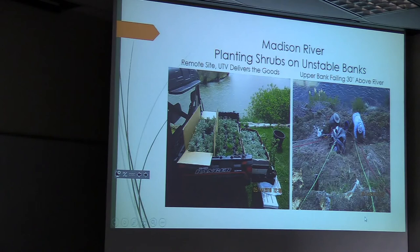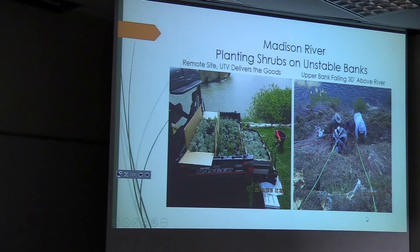Here's a 30-foot bank overhanging the Madison River. We've got woods rose, fringe sedge, a couple different types of rabbitbrush, and three-tip sage. We've got a rappel down in there with the boss lowering plants down to us.